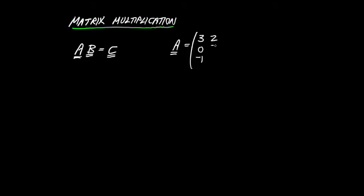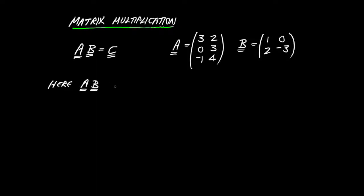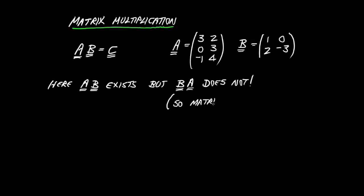It gets more interesting when we try to combine matrices. Matrix multiplication: the product of matrix A by matrix B is written simply as AB, and gives us some new matrix C, which may be a different shape from both A and B. For example, A equals (3, 0, minus 1 / 2, 3, 4) and B equals (1, 2 / 0, minus 3). Here AB is well-defined, but trying to multiply in the other order turns out to be undefined — matrix multiplication is not commutative.